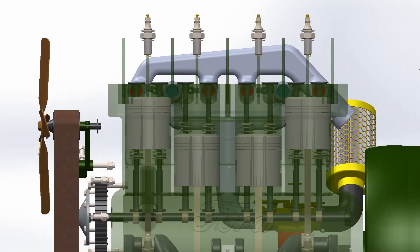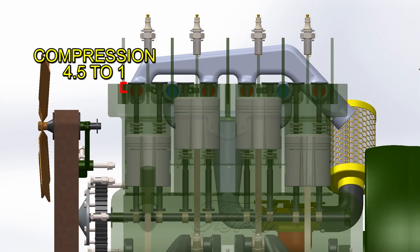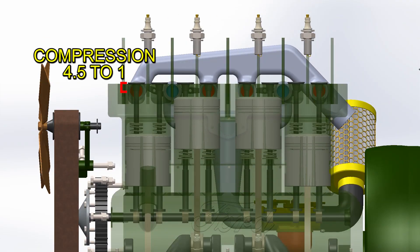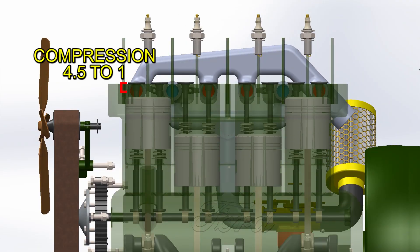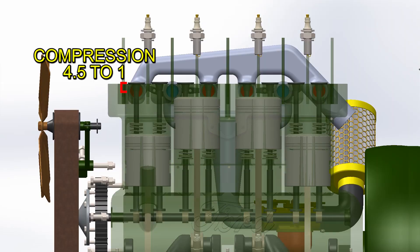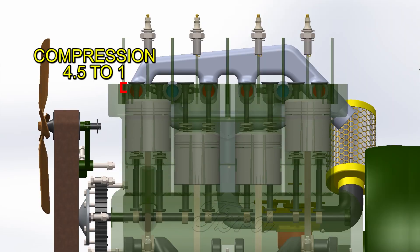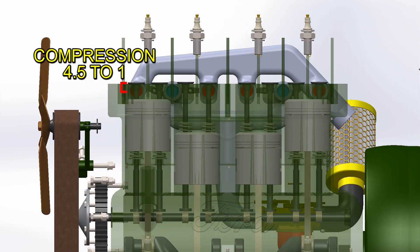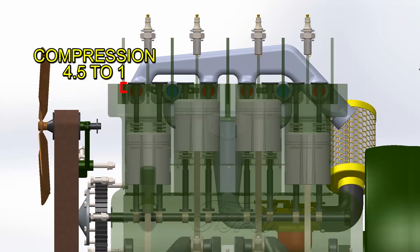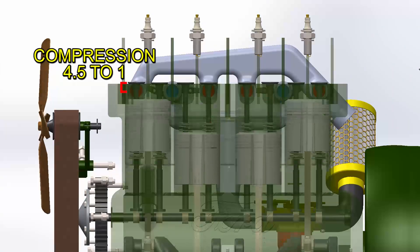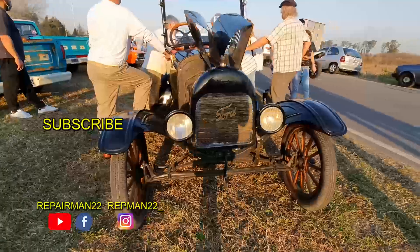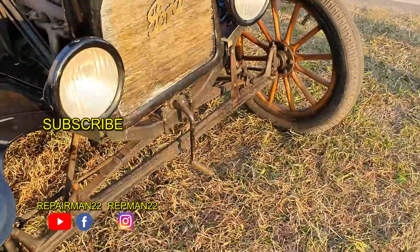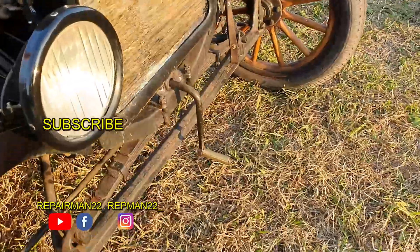Engine compression was just 4.5 to 1 — only half compared to a today's car. This low compression allowed the Ford T to run on kerosene or alcohol, and also made it easy to crank the engine. It was not until 1919 that the electric starter was introduced as an option.